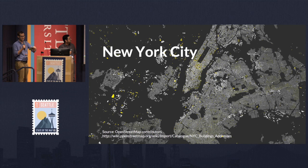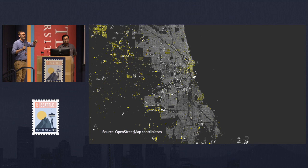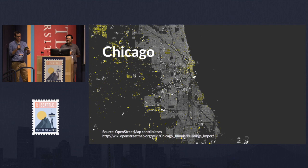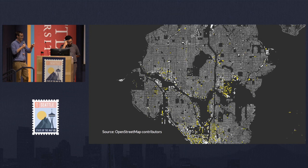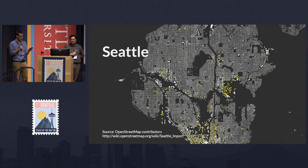Getting harder — what's this one? Chicago, great. Ian Dees, who was mentioned before as not being here — he's in Germany, which is very sad — mostly did a lot of this, and that was done in 2013. What about this one? Seattle, where we are right now. Clifford Snow and some other great people helped do that import and build community around it. That was in 2013 as well.